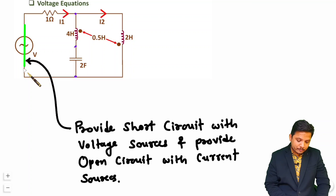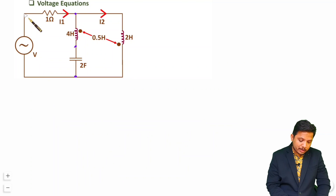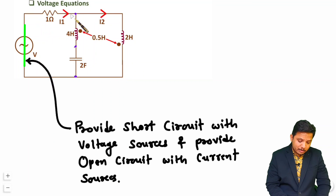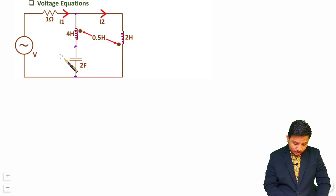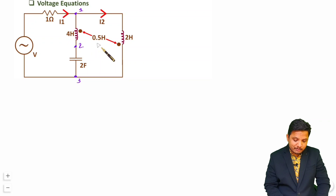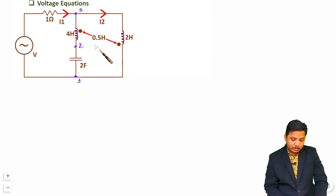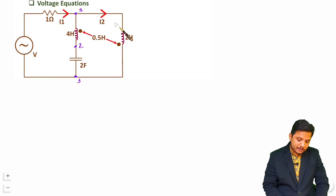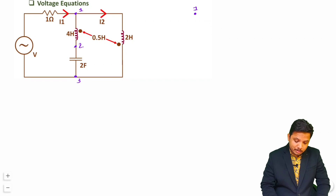This voltage source is short circuited, so you should not consider a separate node for it. With this branch we have only one resistor, so there will be one node — let us say node 1. After the inductor there is a second node, and after the capacitor there is a third node. Note that mutual inductance is given, but in graph theory mutual inductance cannot be considered. So we have three nodes in this circuit: node 1, node 2, and node 3.